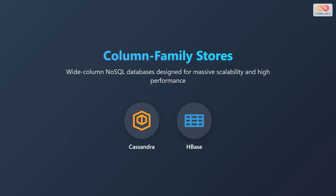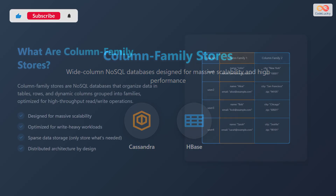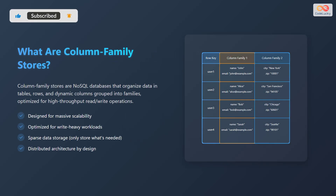Column Family Stores are wide-column NoSQL databases designed for massive scalability and high performance. Two prominent examples include Cassandra and HBase. Column Family Stores are NoSQL databases that organize data in tables, rows, and dynamic columns grouped into families.